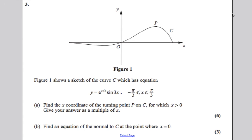This is a question on using differentiation to find the turning point of a curve and the equation of a normal to a curve. Figure 1 shows the sketch of a curve C with a given equation, where x must be between negative π/3 and π/3. Part A asks for the x-coordinate of the turning point of C where x is greater than 0, giving the answer as a multiple of π. Part B asks for the equation of the normal to C at the point where x is 0.